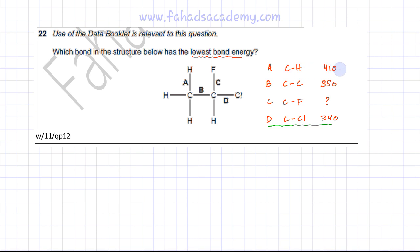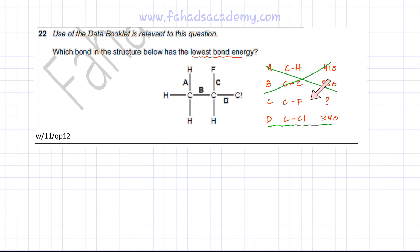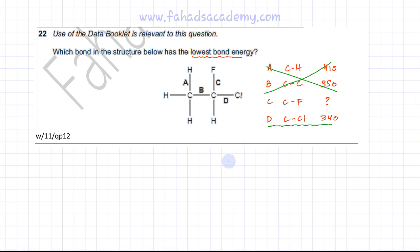We can eliminate options A and B, leaving just the last two options: C-F and C-Cl. The C-Cl bond has the lowest known bond energy so far, but we don't know what the C-F bond energy is. To estimate it, we use the fact that bigger atoms make weaker bonds.